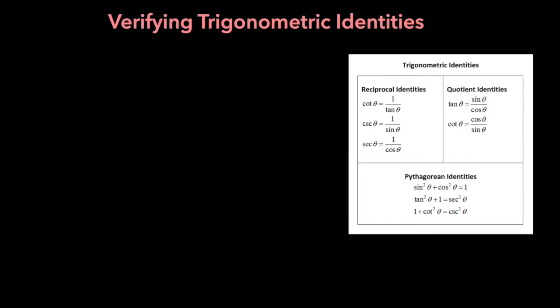In this video, we are going to be going over a couple problems involving verifying trigonometric identities. For these type of problems, you will be given an equation with a bunch of trig functions, and you have to prove or verify that one side of the equation is equal to the other. This process is going to rely heavily on the fundamental trig identities in the chart on the right of the screen, so make sure you have them memorized.